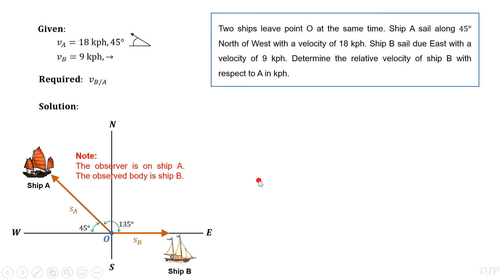Take note that the observer is on ship A while the observed body is ship B. Therefore, the appropriate drawing of the displacement vector for relative displacement of ship B with respect to ship A should be as follows. The tail will always start from the location of the observer with the arrowhead pointing on the observed body. Notice that for this problem, the motions of the given bodies are not anymore along the same straight line. Rather, the bodies are moving along different courses, but still in the same two-dimensional plane.